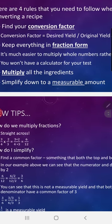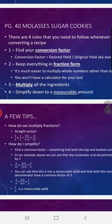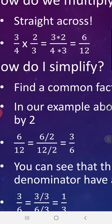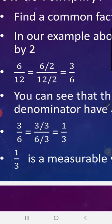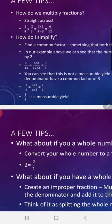To simplify, find a common factor — something both the top and bottom share. Both 6 and 12 can be divided by 2, giving us 3/6. But 3/6 is not a measurable yield, so simplify further. Both are divisible by 3: 3 divided by 3 over 6 divided by 3 equals 1/3. That is a measurable yield and an acceptable answer.